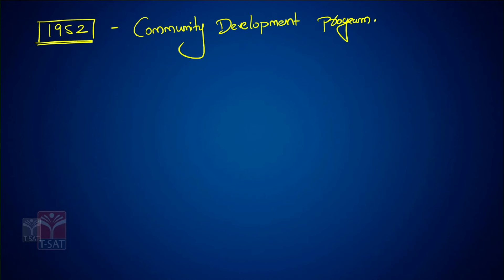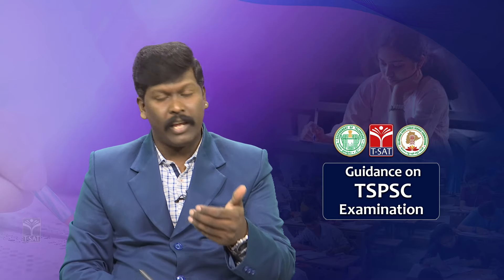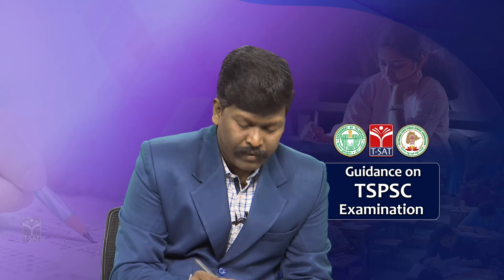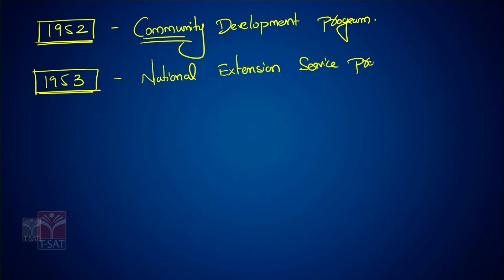In 1953, the Nehru government launched the National Extension Service Program. The main aim was to extend the central schemes to the village level, to reach the last person of the village.